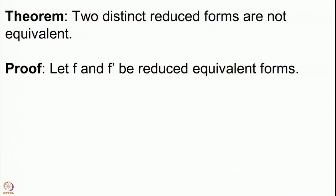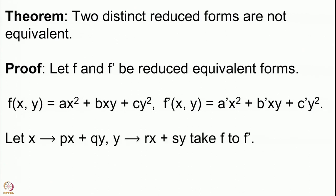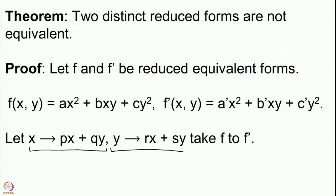Suppose we have two reduced equivalent forms; we call them f and f prime. Let us say that f of x comma y has coefficients a, b, and c, and f prime is given by a prime, b prime, and c prime. We are assuming that these two are reduced forms, so there are standard inequalities these coefficients satisfy. We further assume they are equivalent, so there is a change of variables x going to p x plus q y and y going to r x plus s y which takes the form f to f prime.